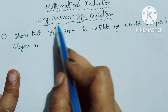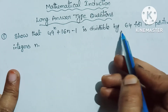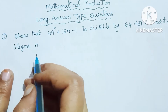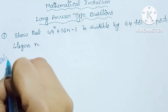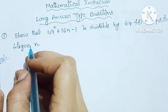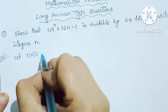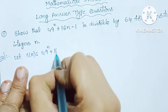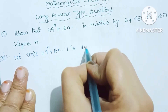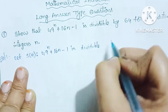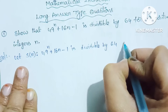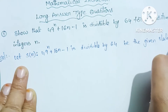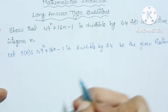So show that 49 power n plus 16n minus 1 is divisible by 64, for all positive integers n. Let S of n denote the statement: 49 power n plus 16n minus 1 is divisible by 64. Be the given statement.